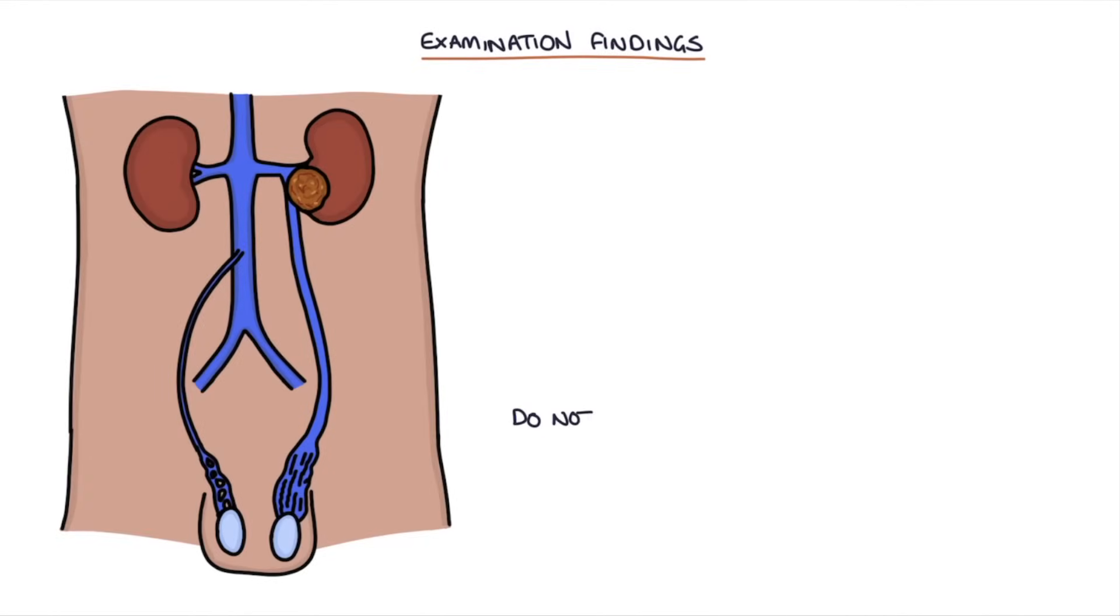Varicoceles that do not disappear when the patient lies down should raise concerns about retroperitoneal tumours that can be obstructing the drainage of the renal vein. These warrant an urgent referral to urology for further investigations.